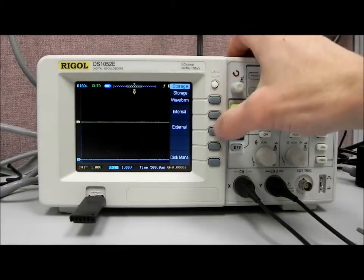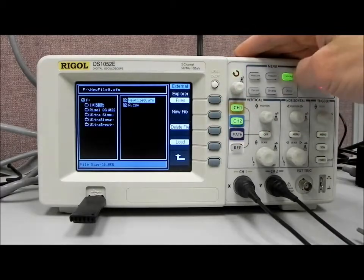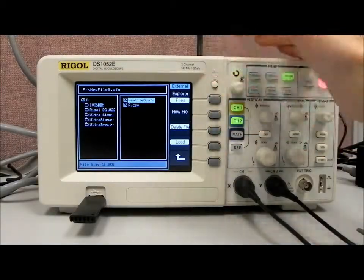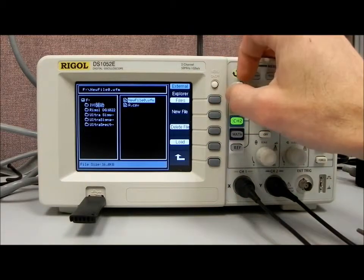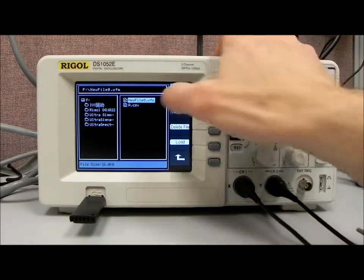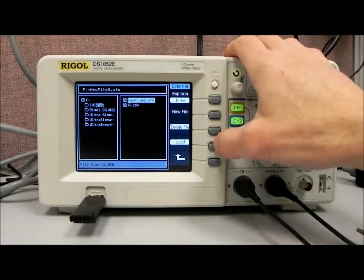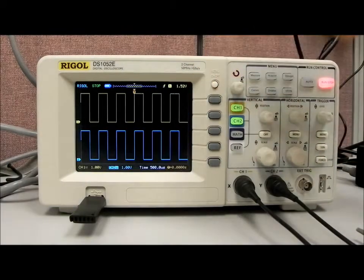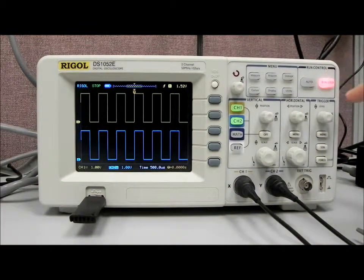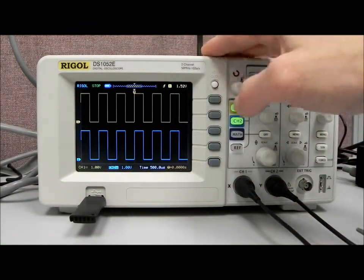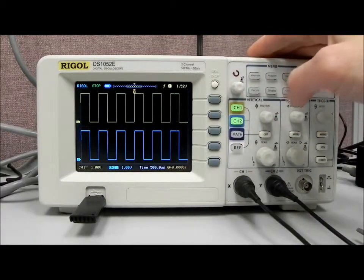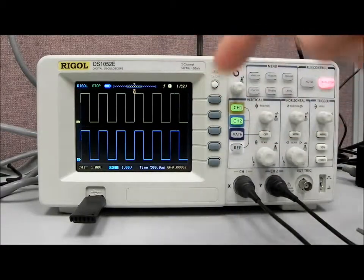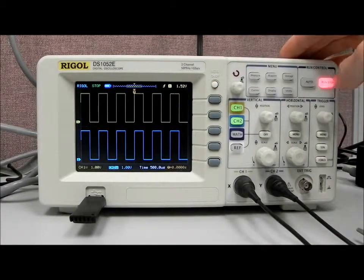Now let's load that waveform from the external file. So I hit storage, external, and now I'm going to hit load on the file of interest. Again, I'll select that new file zero dot waveform that we just collected and hit load, and now you'll see that the scope has stopped and we've also redrawn that waveform on the display. And that way you can transfer waveforms between different areas if you'd like.